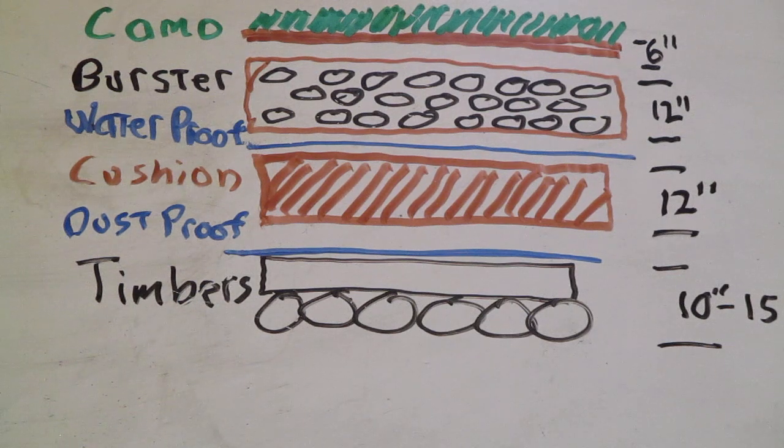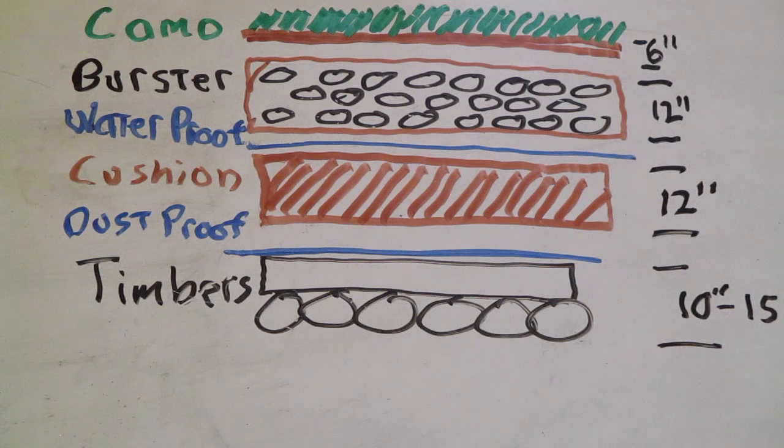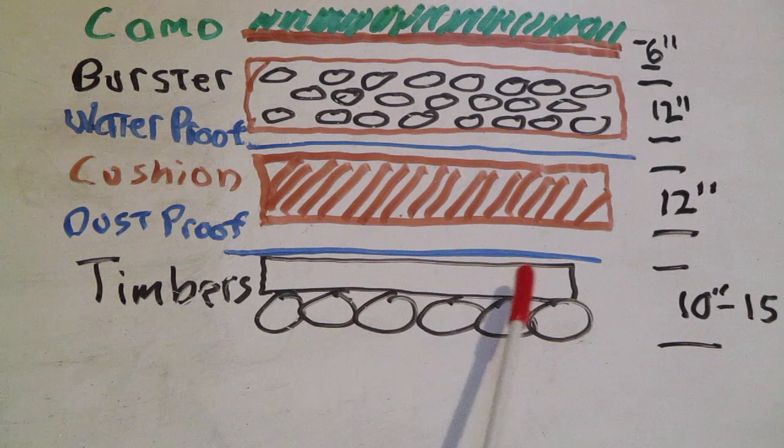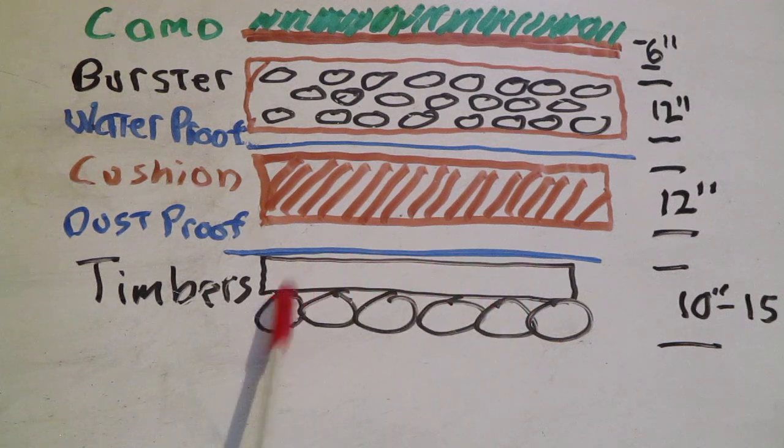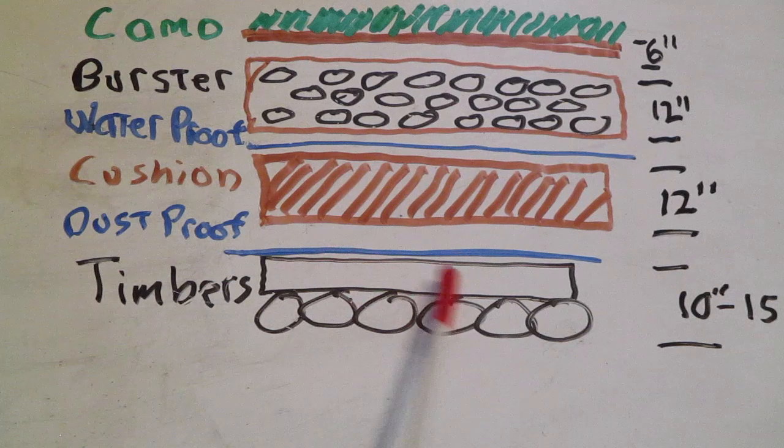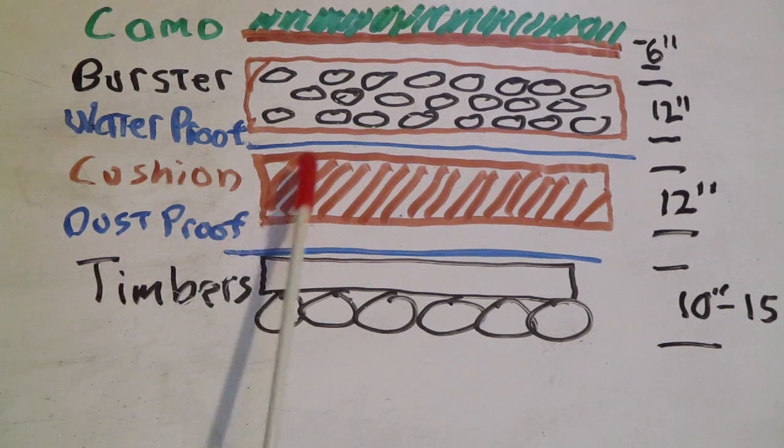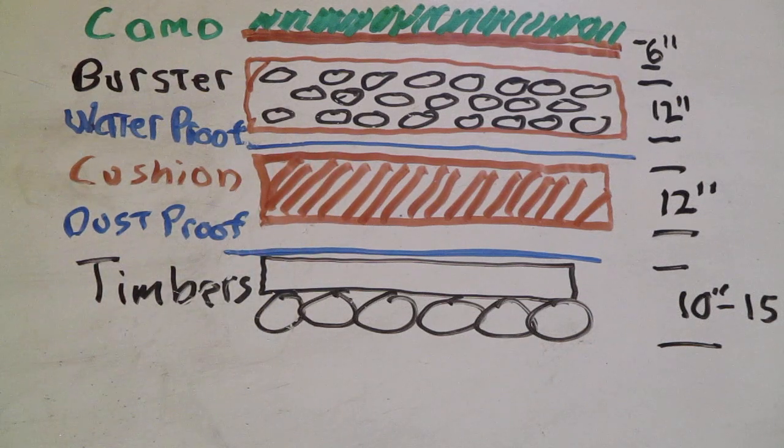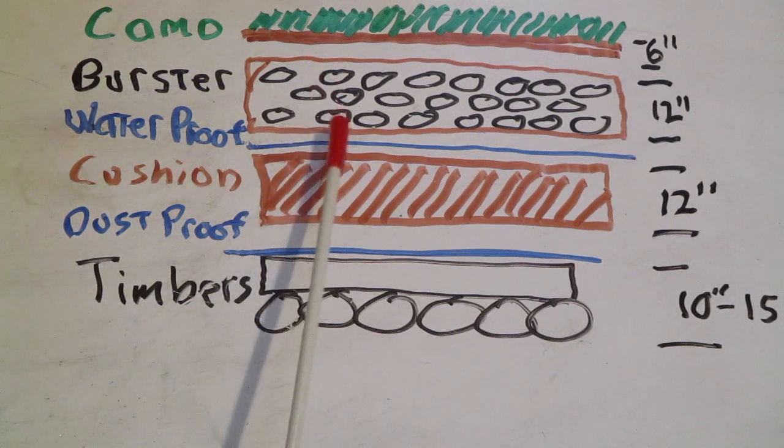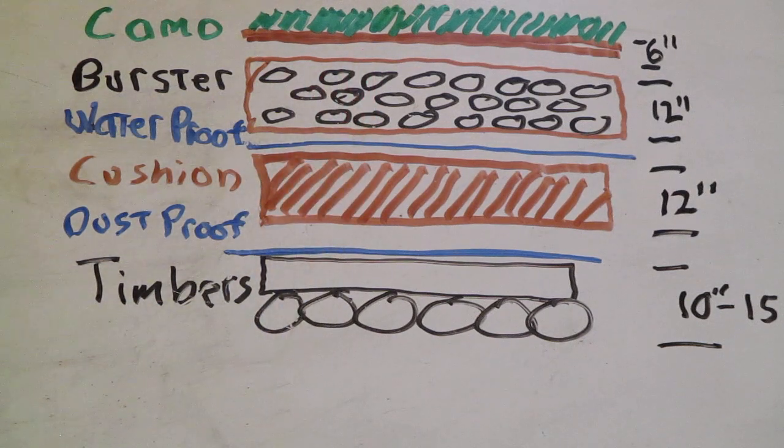I came across somewhere in the US manual over the years a different layering system than this, based off that Chinese system. The timbers, from what I remember, were like 10 to 12 inches thick and they were all laminated like this. You would have your dust proof waterproof layer, you would have your cushion layer that would be at least a foot, and then this burster layer was like three to four feet in depth.